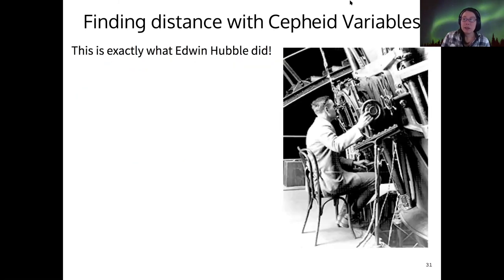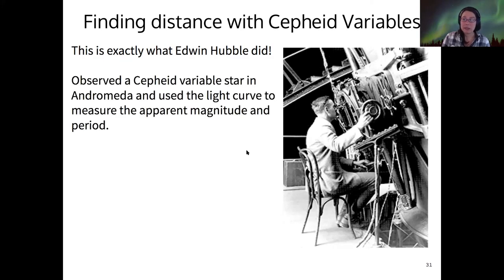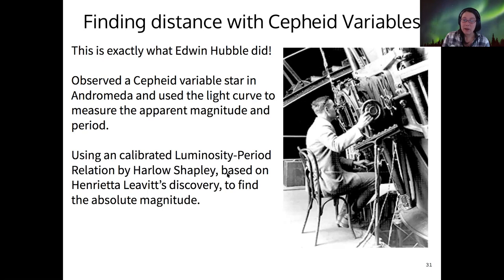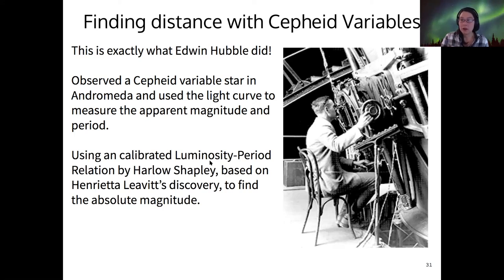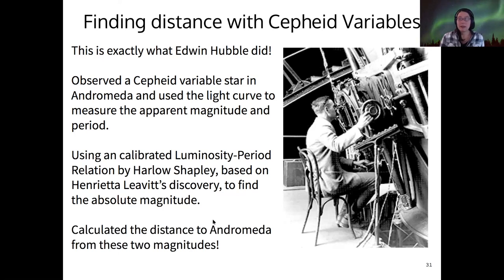It was using the method of Cepheid variable stars that Hubble was able to measure the distance to Andromeda. He found a Cepheid variable star in Andromeda, used its light curve and the period-luminosity relationship from Leavitt, and then measured its apparent magnitude to find the distance. It relied on the work of Henrietta Leavitt and Harlow Shapley in order for Hubble to make the huge discovery that Andromeda was actually another galaxy and not just a nebula — and that's how this big picture of extragalactic astronomy was built by those individuals.